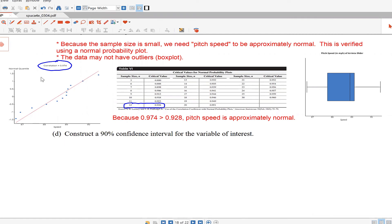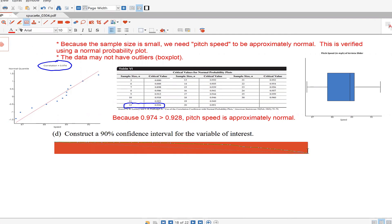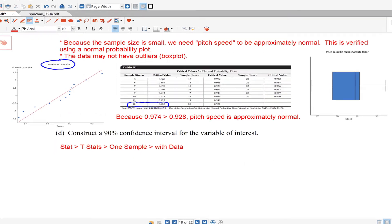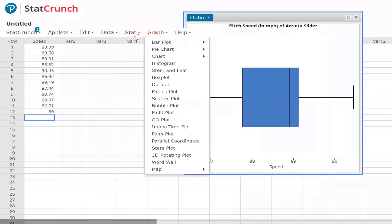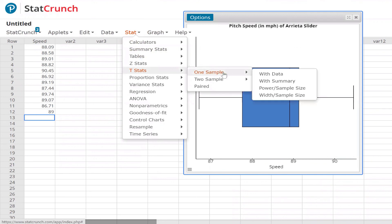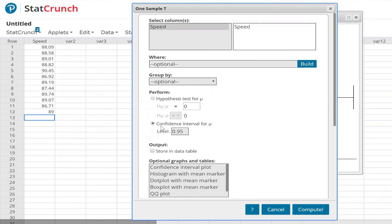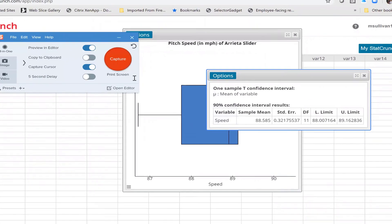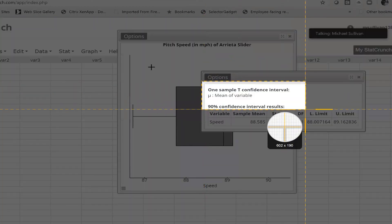Now we're being asked to construct a 90% confidence interval for the variable of interest. We're going to go stat, t stats, one sample, and we have raw data here, not summarized data. The variable is speed. We're constructing a 90% confidence interval, so you change the level of confidence to 0.90. Hit compute, and we get our confidence interval.